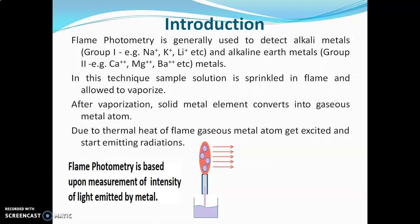This emission of radiation is the basis of flame photometry. Flame photometry is based upon measurement of the intensity of light emitted by the metal. The color of the light — meaning the wavelength of the light — tells us which metal is present, and the intensity of the light tells us how much metal is present.